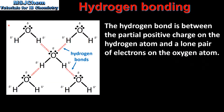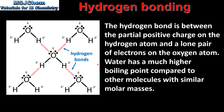Next we will look at the formation of hydrogen bonds between water molecules. From the diagram we can see that the hydrogen bond is formed between the partial positive charge on the hydrogen atom and the lone pair of electrons on the oxygen atom. Each water molecule can form four hydrogen bonds with four other water molecules: two hydrogen bonds using the lone pairs of electrons on the oxygen atom and two hydrogen bonds between the two hydrogen atoms and the lone pairs of electrons on other water molecules. Hydrogen bonds are the reason why water has a much higher boiling point compared to other molecules with similar molar masses.